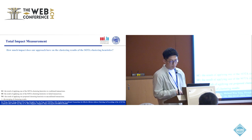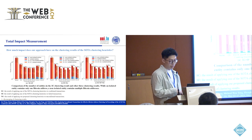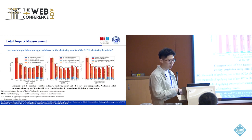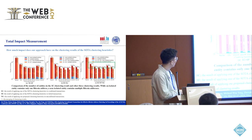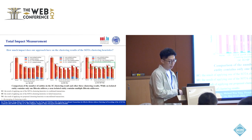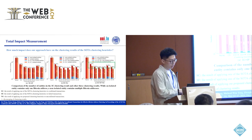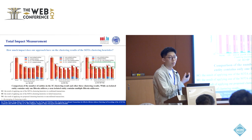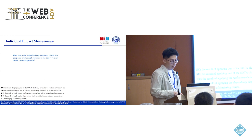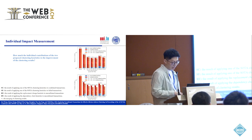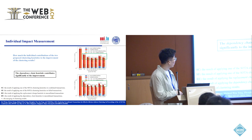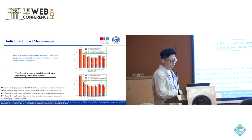The second question is: how much impact does our approach have? We measure the total impact by comparing the number of entities across various clustering heuristics. Our approach significantly reduced the total number of entities by over 20%, reflecting its ability to reduce errors where addresses belonging to the same entity are wrongly clustered into multiple entities. The third question asks about the individual contributions of the two proposed heuristics. Analysis shows that the dependency chain heuristic contributes significantly to the improvement, highlighting its effectiveness in identifying address associations.